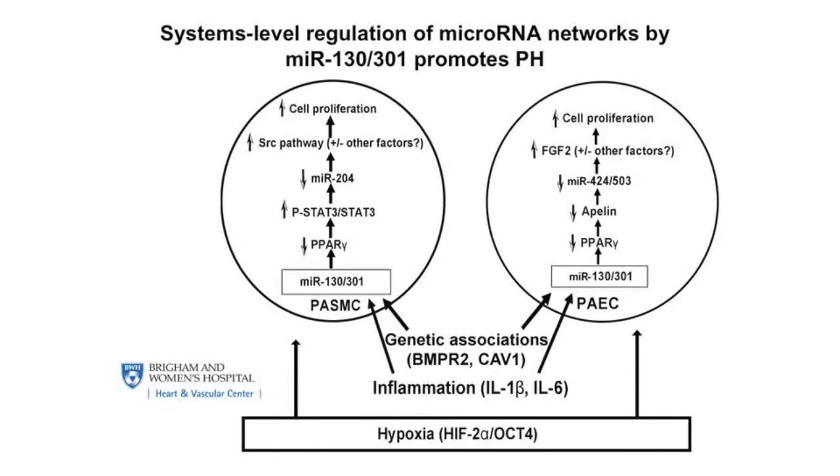Second, we examined a broad spectrum of disease models of PH, spanning seven different models in rodents and sheep, as well as three different subtypes of human disease. In all cases, we found a coordinated upregulation of all miR-130/301 family members, particularly in remodeled pulmonary vessels.